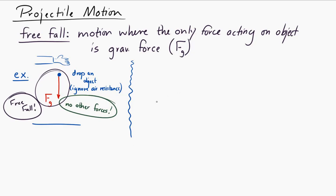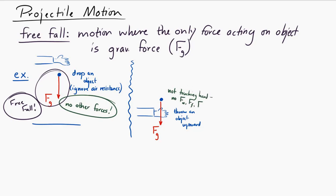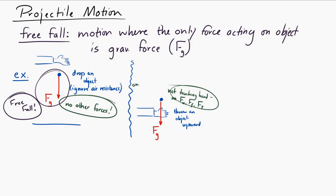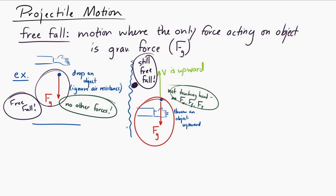Let's look at another example. Say you throw an object upward. After it leaves your hand, the only force acting on it is the gravitational force — there's no normal force from your hand, no tension, no friction. So the object is in freefall. That seems a little odd because its velocity is upward, at least for a while, but it's still considered freefall because the only force acting is gravitational force.